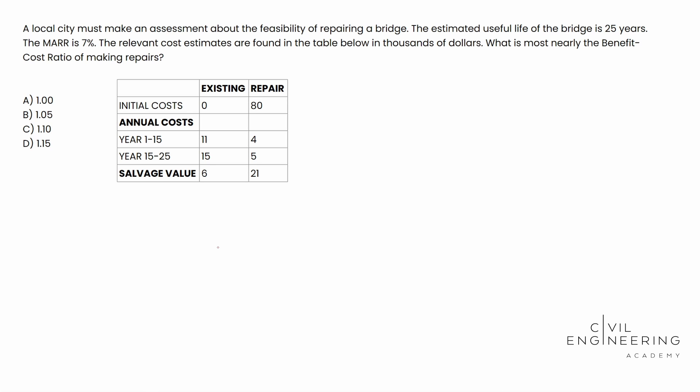If we delay it, the annual cost from year 1 to 15 is going to cost 11K, whereas if we repair it, 4,000. And then from years 15 to 25, 15,000 if we don't do anything now, whereas if we repair it later down the road, it'd be 5,000 from year 15 to 25. And then the salvage value of the bridge that we have now, if we don't repair it, it's going to be 6,000. Whereas if we do repair it at year 25, it's going to be 21,000 salvage value.